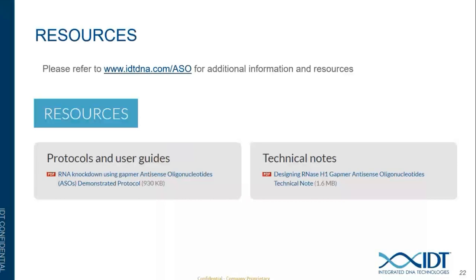Regarding GMP ASOs: IDT is currently building a GMP facility initially focused on CRISPR guide RNAs, with the goal of expanding capabilities to other therapeutic oligos including ASOs. The ultimate goal is to assist customers from the ASO screening stage through preclinical development. Understanding customers' cGMP ASO needs is valuable, so please contact IDT or your sales representative.